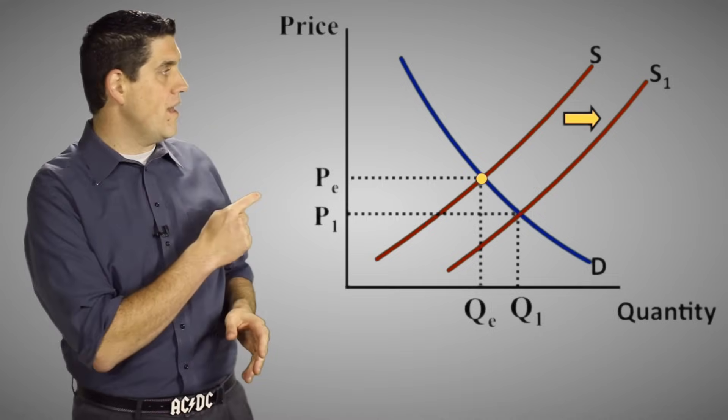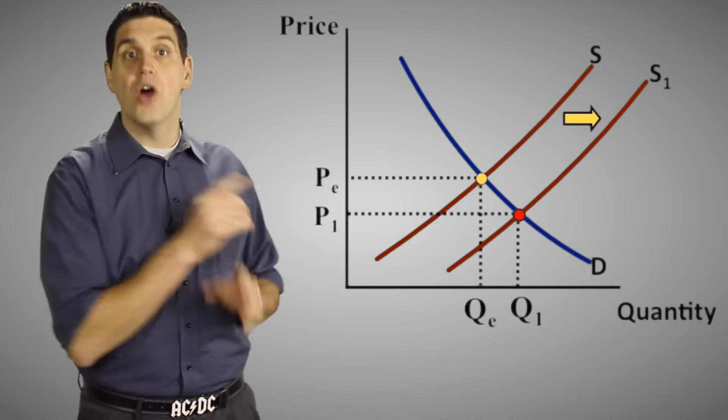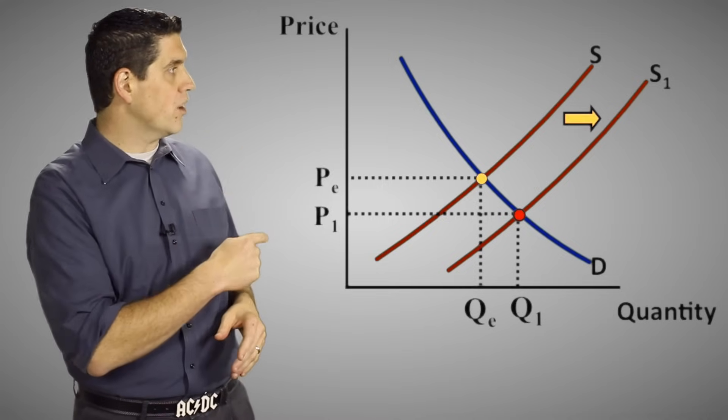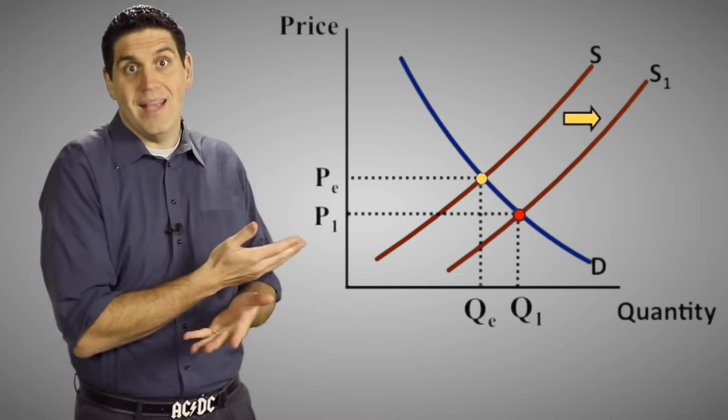In this case, we started right here and then the price ended up right here. So whenever the supply increases and the supply curve shifts to the right, the price is going to go down and the quantity is going to go up. Easy, right?